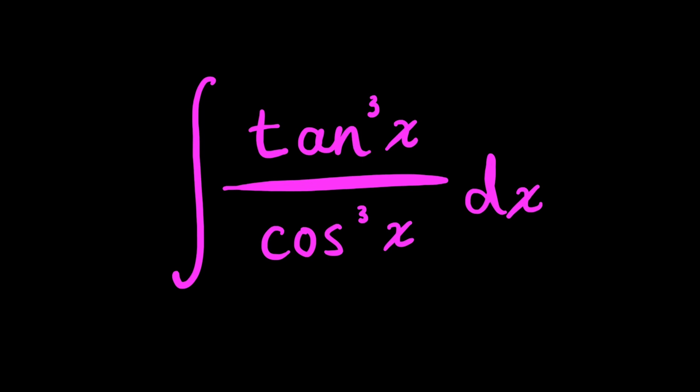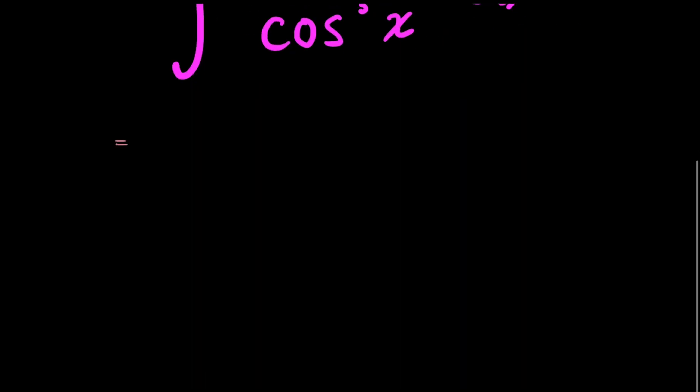So I don't want that tan cubed x. So instead of tan cubed x, I'm going to rewrite it in terms of sines and cosines. We know that tan x is equal to sine x over cosine x, so tan cubed x is going to be equal to sine cubed x over cosine cubed x. And then this is all over cosine cubed x.